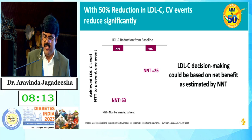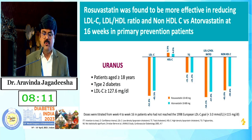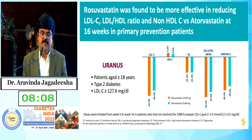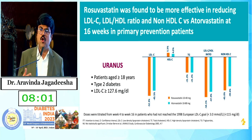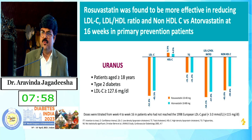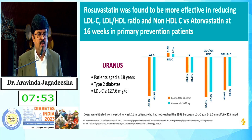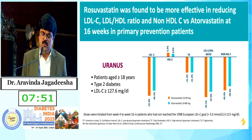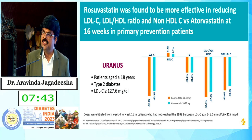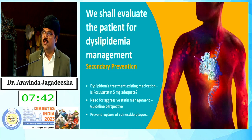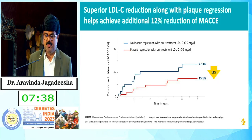With 50 percent reduction in LDL-C, CV events reduced significantly. Rosuvastatin was found to be more effective than atorvastatin in reducing LDL-C, LDL-C/HDL ratio, and non-HDL-C. In the URANUS study, rosuvastatin scores over atorvastatin in reduction of LDL-C, triglycerides, and non-HDL-C.